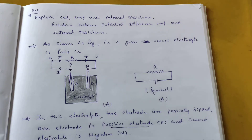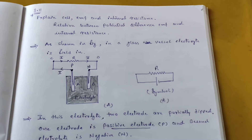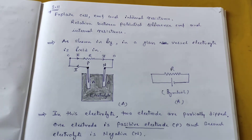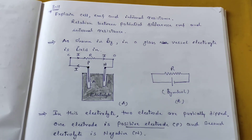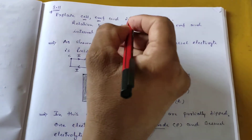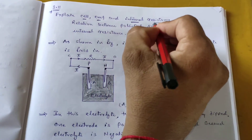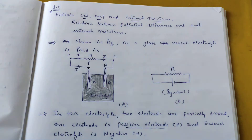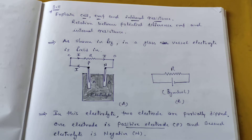Hello, welcome to the new video of Chapter 3. In today's video we are going to see: what do you mean by cell, what do you mean by EMF, and internal resistance. We have different types of cells — dry cell, chemical cell — and how they work.